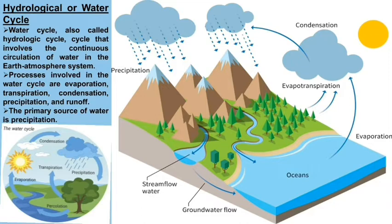The water cycle is also known as the hydrological cycle. In the water cycle, there is continuous circulation of water between the Earth and its atmosphere. Various processes are involved such as evaporation, transpiration, condensation, precipitation, and runoff.